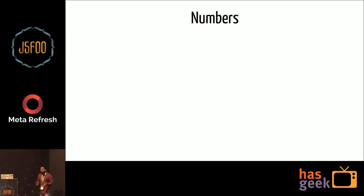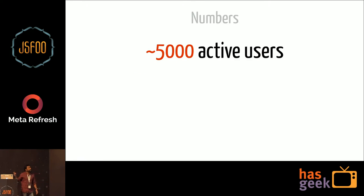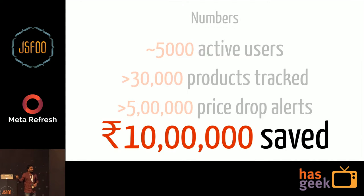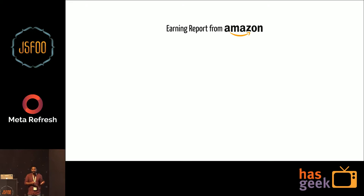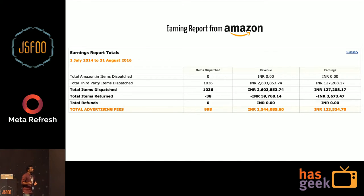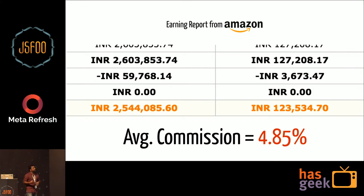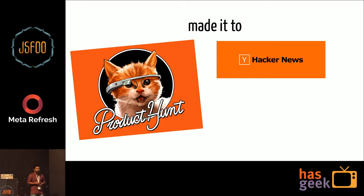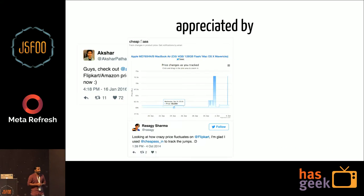I'd like to give you a brief idea about the scale at which CheapAss is currently operating. It's being used by about 5,000 active users as of today, tracking more than 30,000 products in total. It has sent over 5 lakh price drop alerts and helped people save about 10 lakh rupees in total. Here's a sample report from Amazon since the service has been running — about 1,000 products have been bought. The total amount of goods purchased was about 25 lakh rupees, and Amazon paid me a tiny commission. The service also made it to Product Hunt and Hacker News — number one spot for more than five hours.